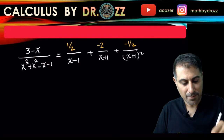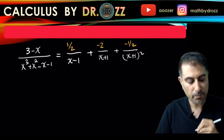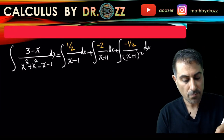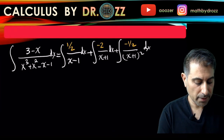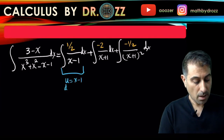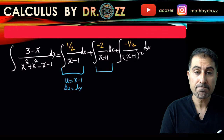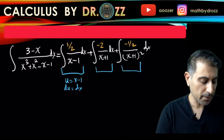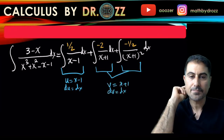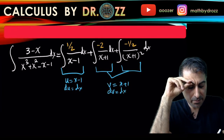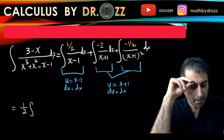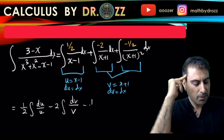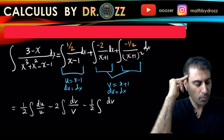Now I'll integrate. Using u equals (x minus one) so du equals dx, and v equals (x plus one) so dv equals dx, I rewrite the integral as: one half times du over u, minus one half times dv over v, minus 2 times dv over v, minus one half times dv over v squared.